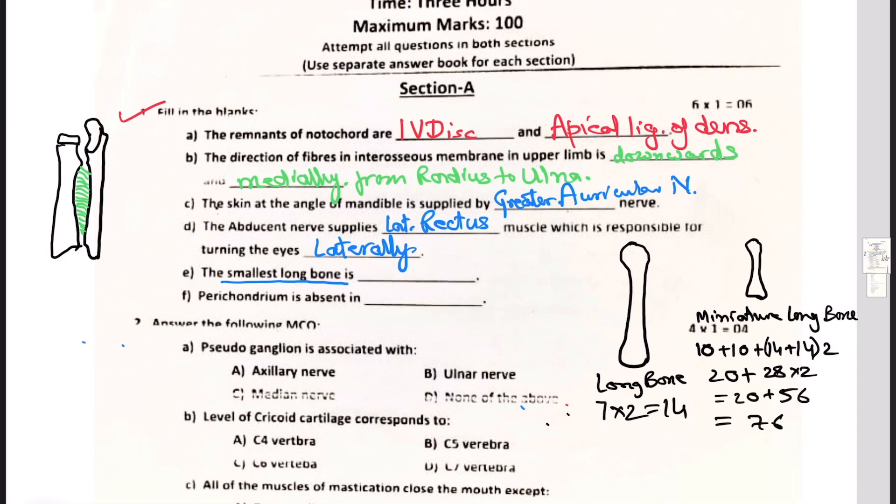There's a difference between long bone and miniature long bones. The most important difference is there is a primary center of ossification that develops in the diaphysis of the long bones - same for both long bones and miniature long bones. Then in long bones there is secondary center of ossification that develops generally after birth at both its ends, but in miniature long bones you have only one secondary ossification center.